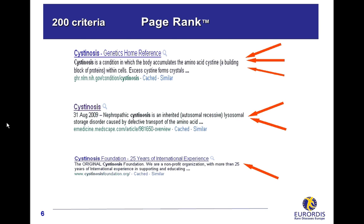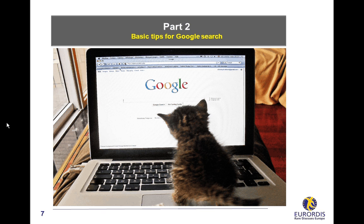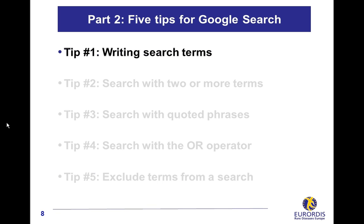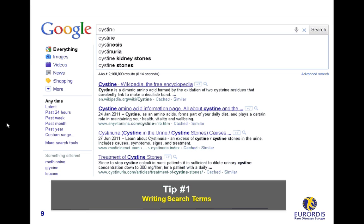Here are some basic tips to help you using Google. Writing search terms: as you are typing your words, Google tries to help you by suggesting terms which might fit your query.